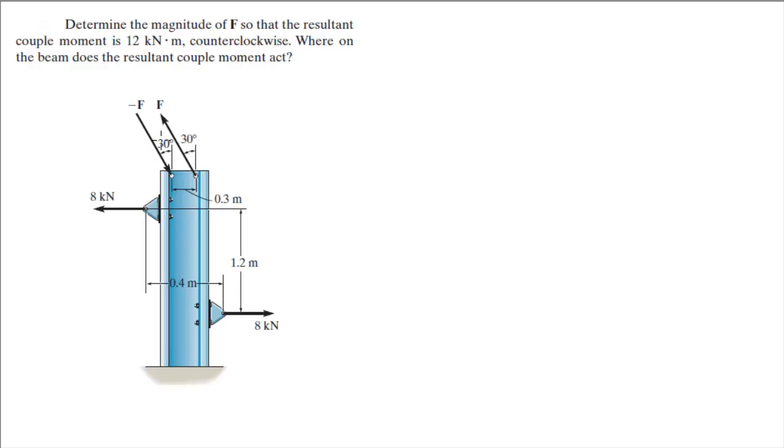So the first thing you need to understand is that as you can see these forces are at an angle of 30 degrees, and if you were to divide it into components, you have for this F this one right here, and for this other F you have one going down and one going to the right. So as you can see,